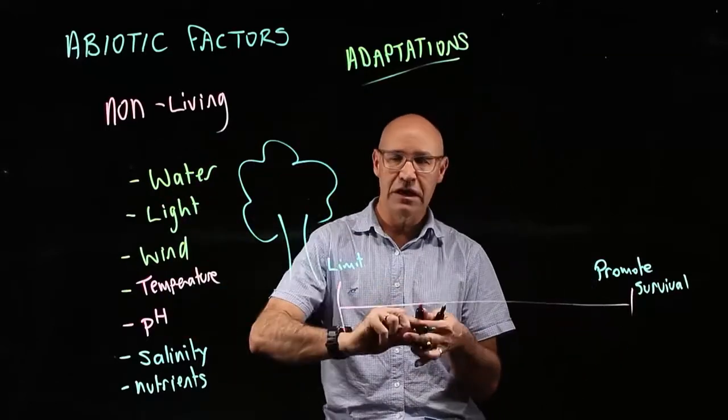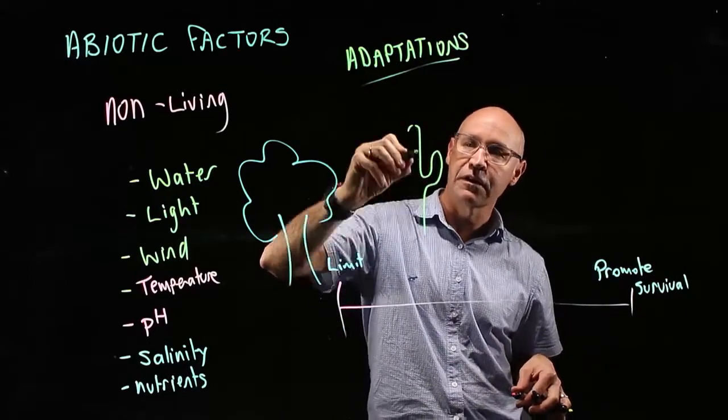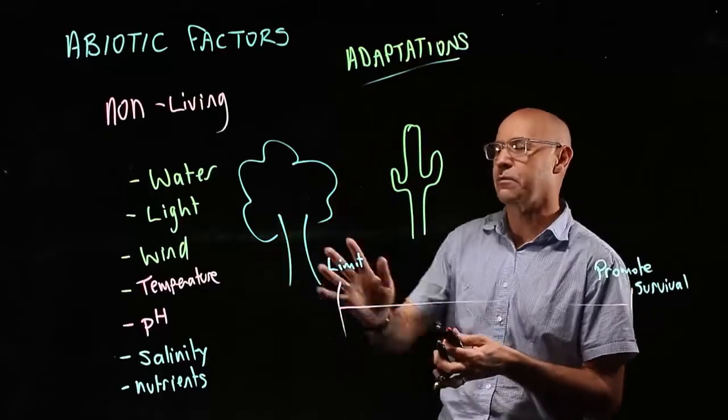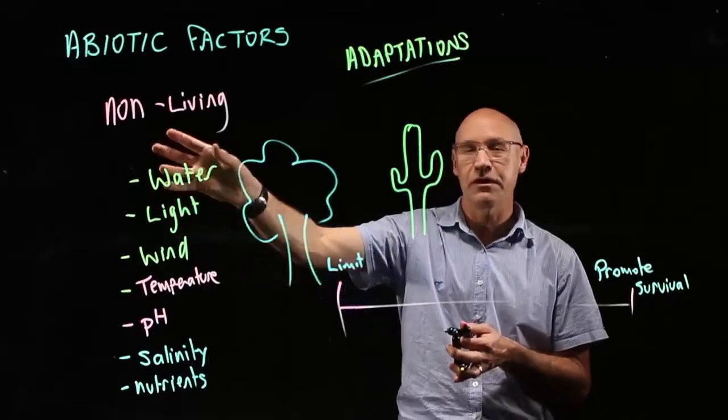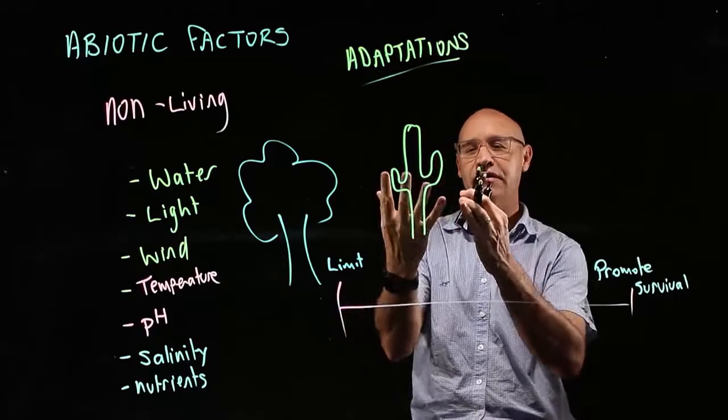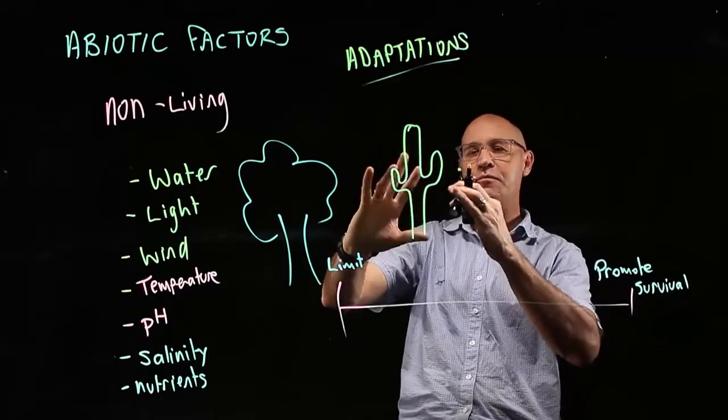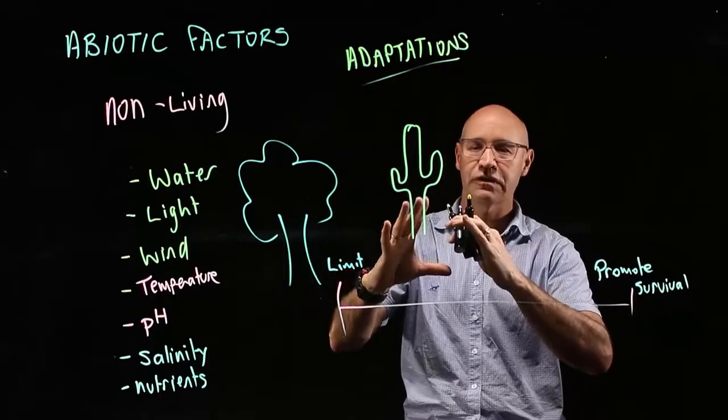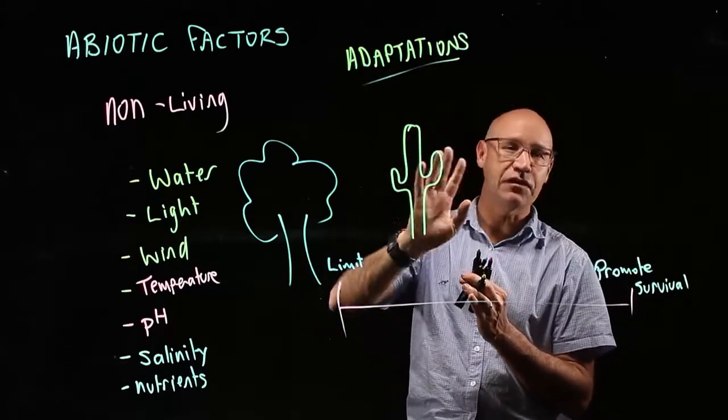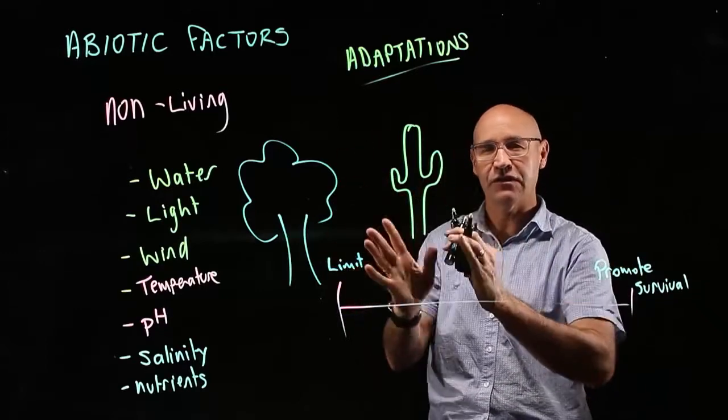For example, let's think about a cactus that lives in the desert. A cactus is in an area with high light but very low water and very high temperatures. The trouble with high temperatures and low water is that it's very hard for the plant to retain water. The cactus doesn't have any leaves because plants normally lose water through their leaves. Instead, the cactus photosynthesizes through its stems and trunk.